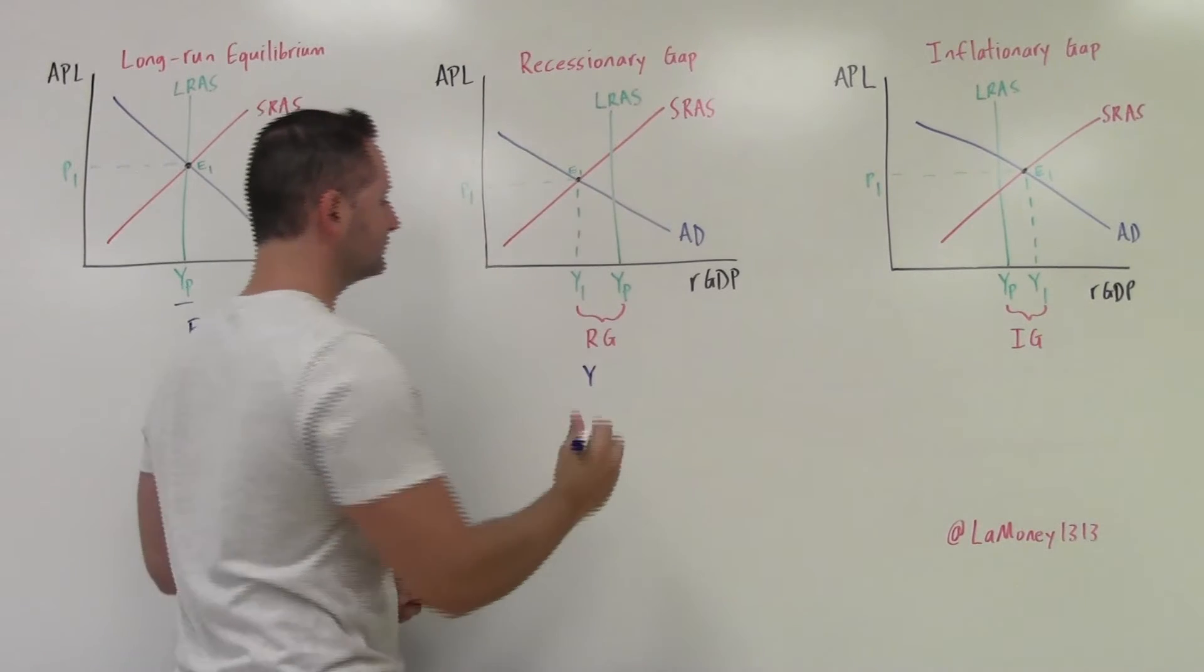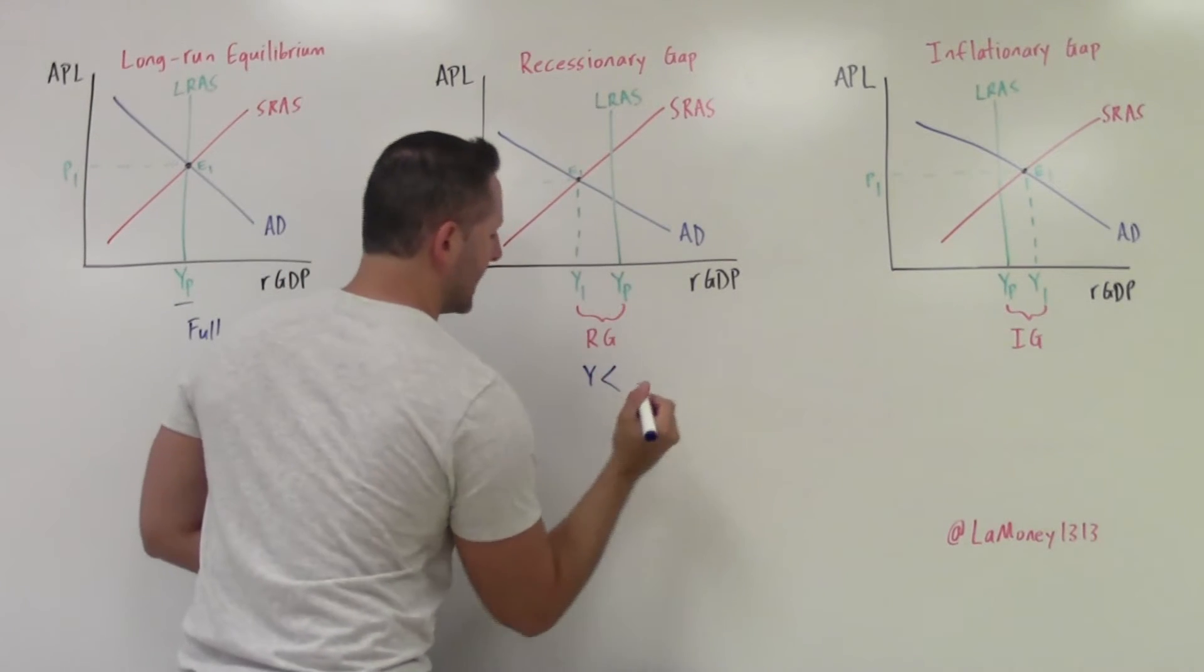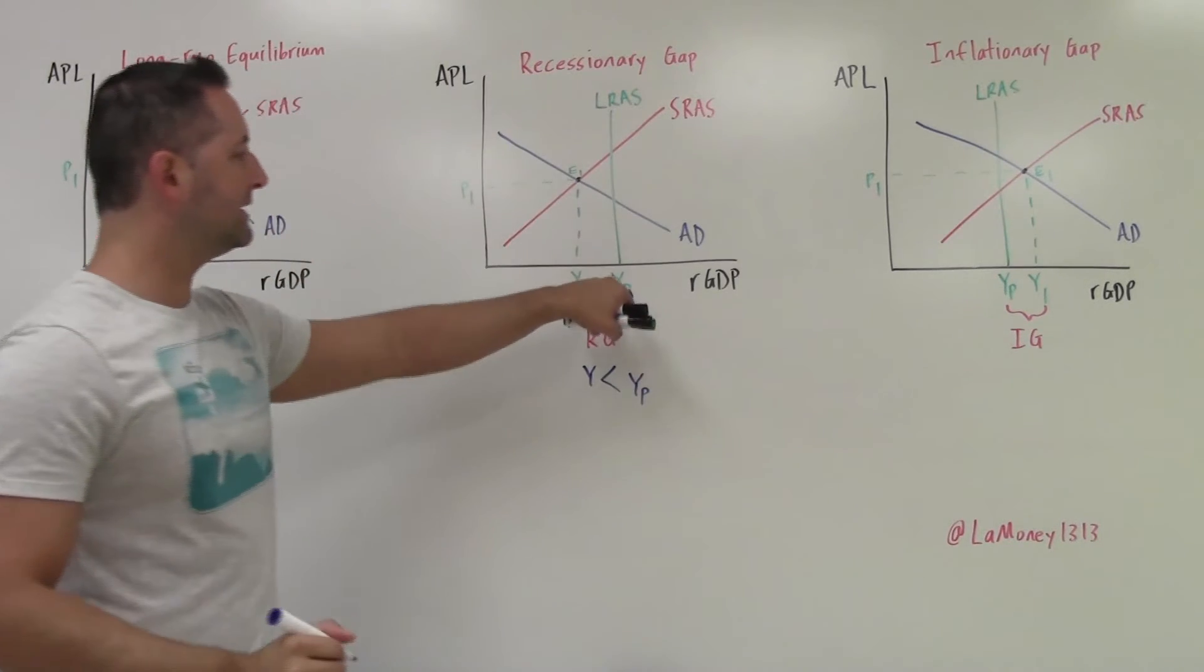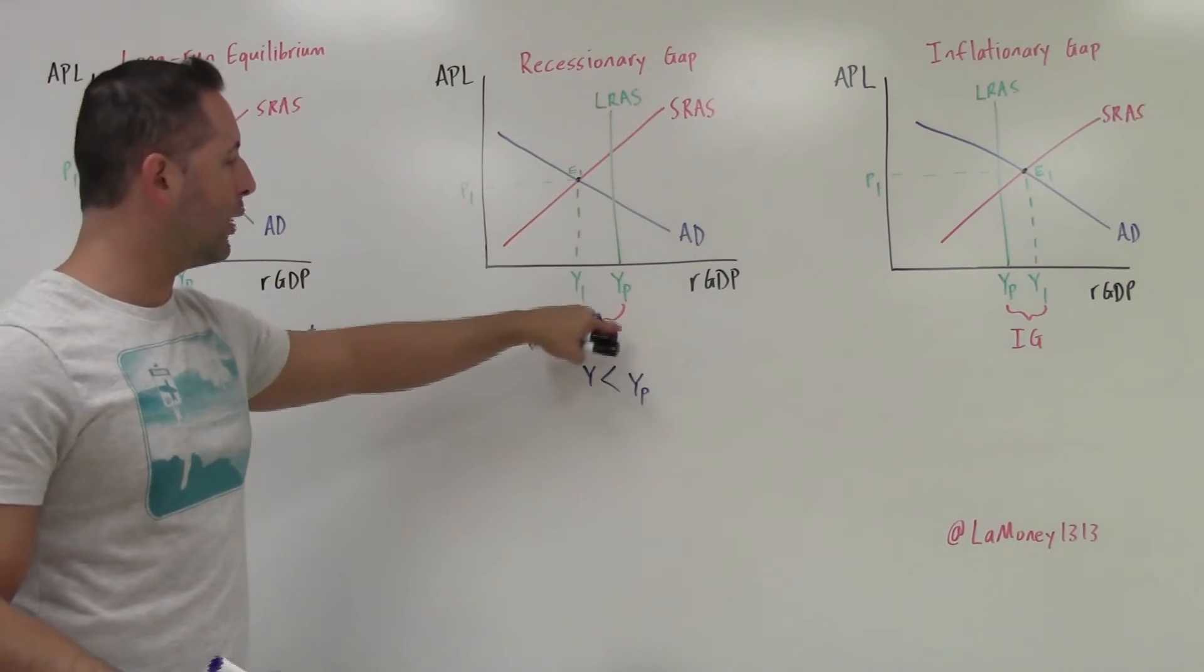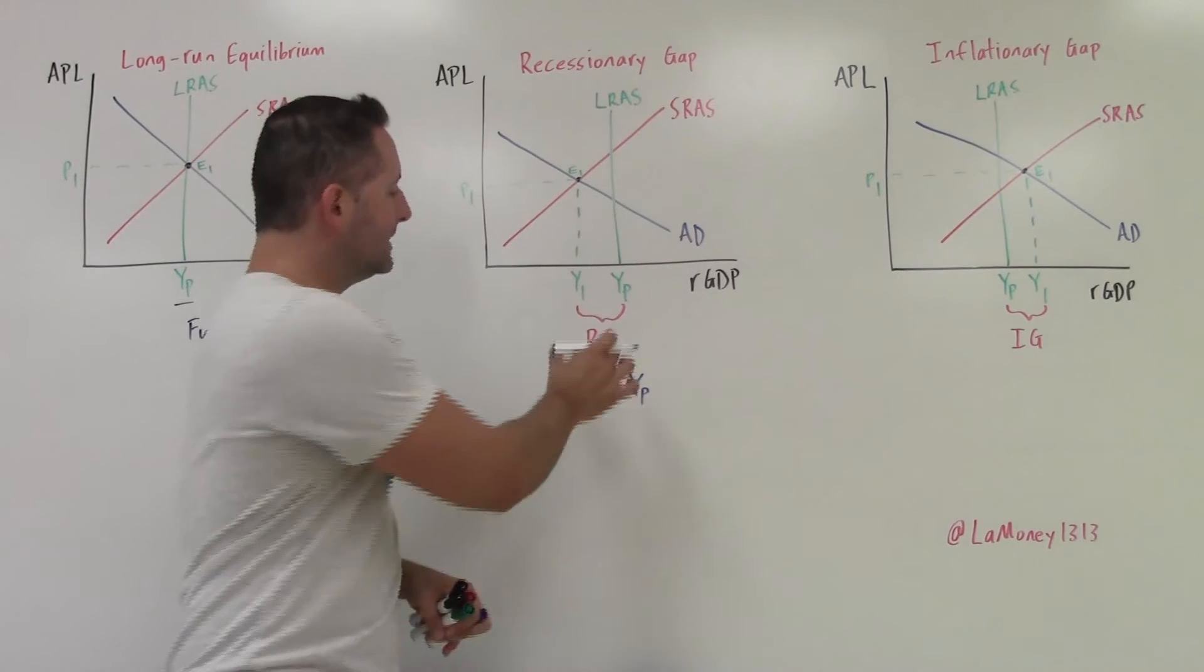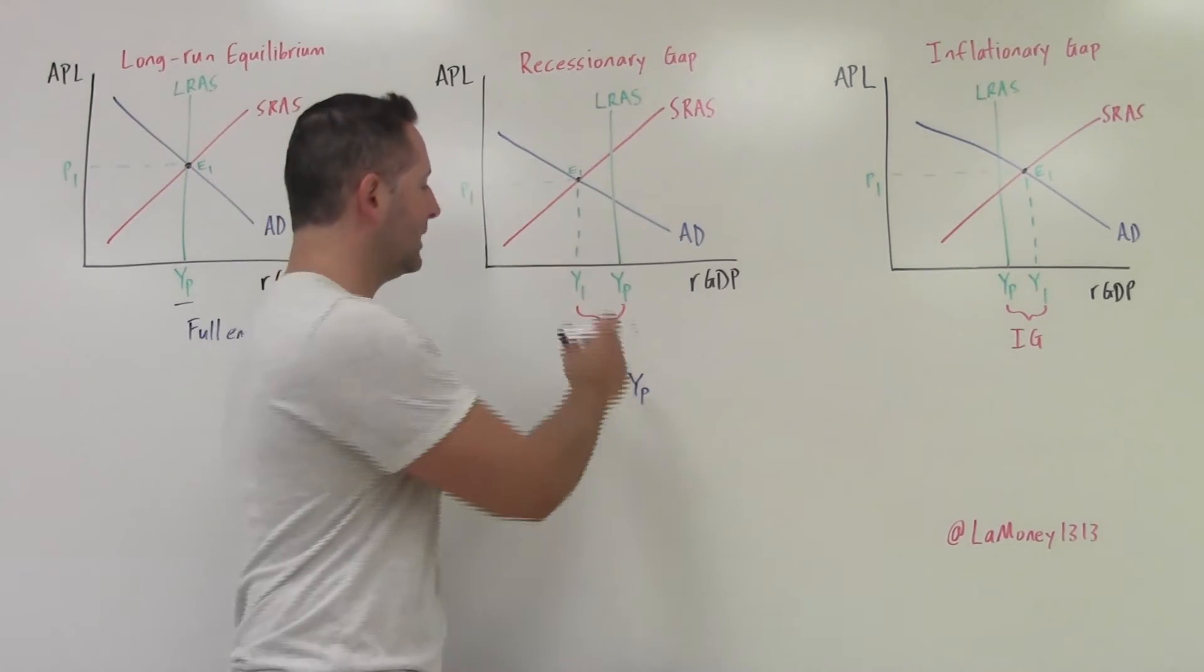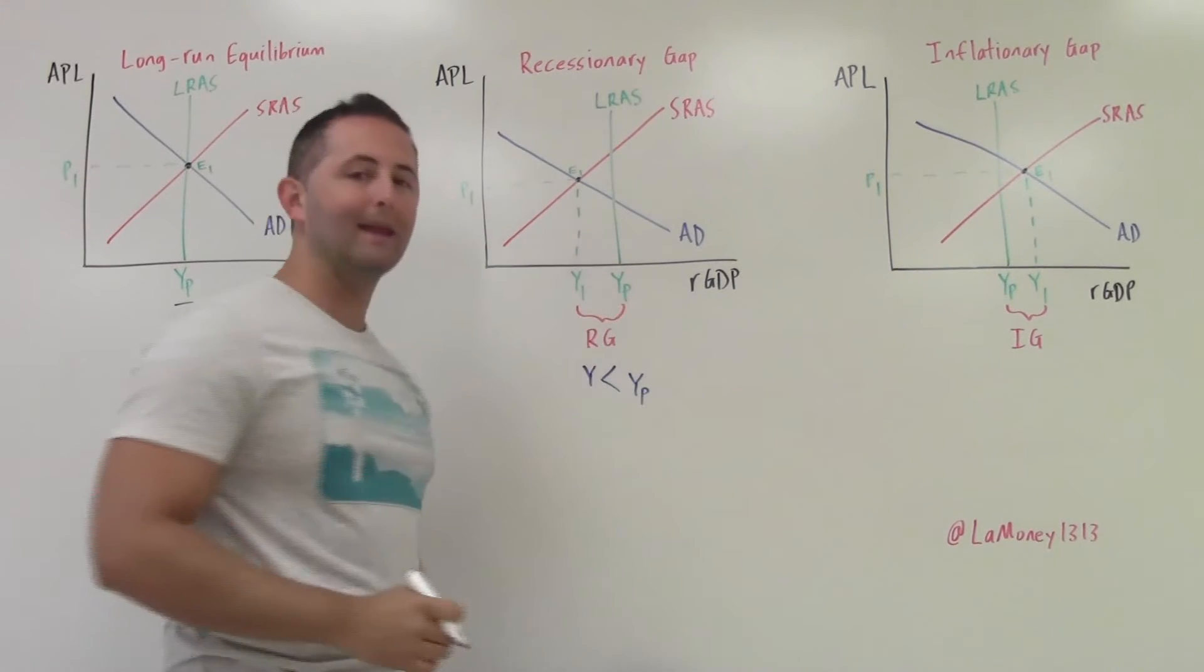So E1 we see is to the left. So what that means is actual output is less than potential output, which we had written previously, but let's go ahead and put that. So actual output, which is Y, is less than potential output. And we see this right here, Y1 and YP.